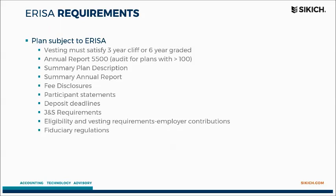For those subject to ERISA, this outlines the applicable areas. You must have certain vesting schedules set out by those criteria. You should be filing the Form 5500, and for organizations with 100 or more participants you need to have the audit done. You also have to provide employees with a summary plan description, summary annual report, and other materials, including making sure employee contributions are deposited timely along with loan payments.